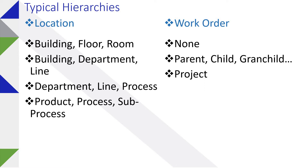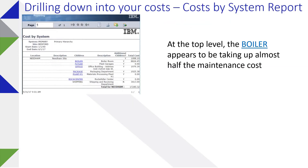Work order hierarchies can vary as well. Location hierarchies help with reporting and being able to drill down into your costs, in addition to costs being presented on individual records. So at the top level, with a delivered report in Maximo, you can see costs.